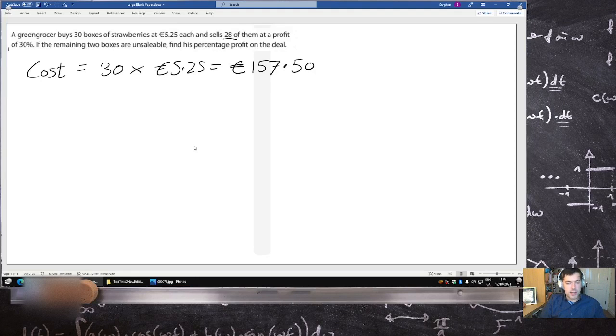So let's try and figure out the sales here. The sales would be 28. That's how many were sold. But they weren't sold for €5.25. That's the problem.